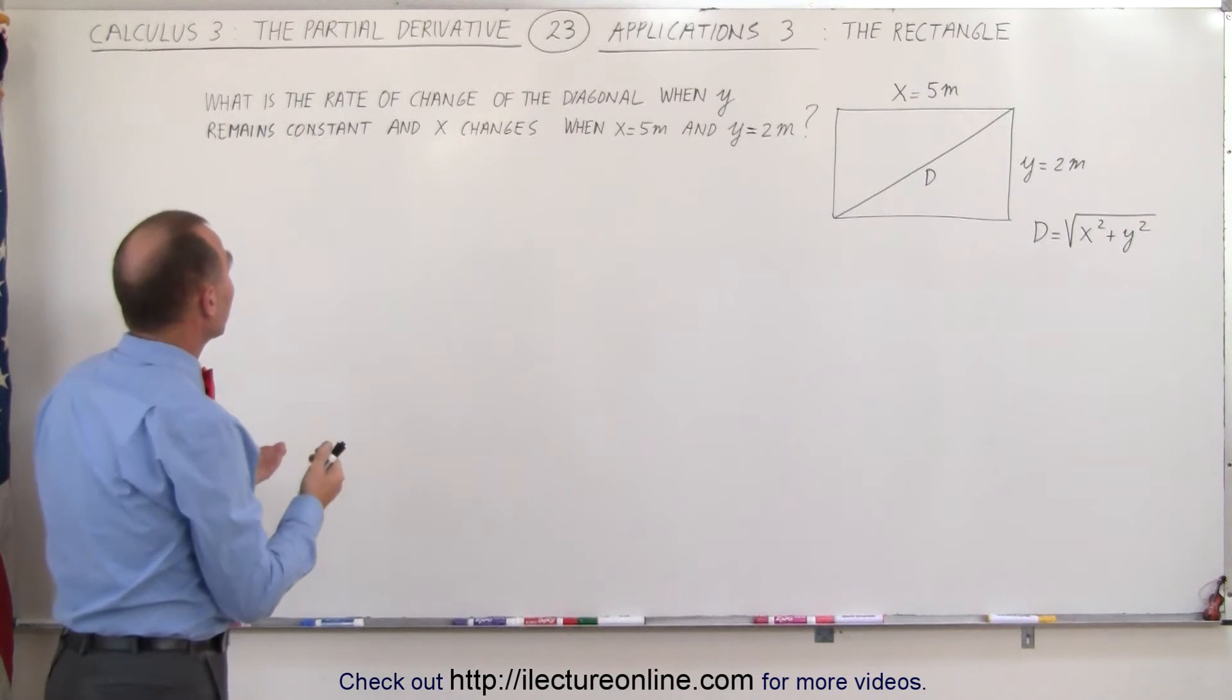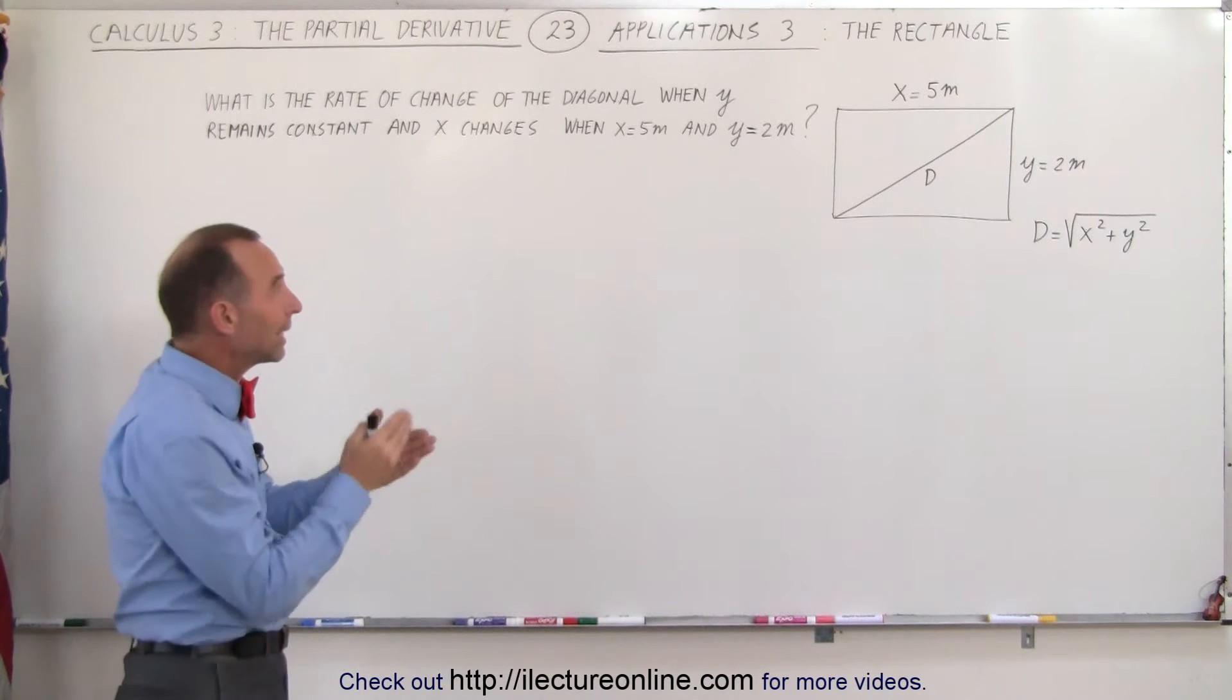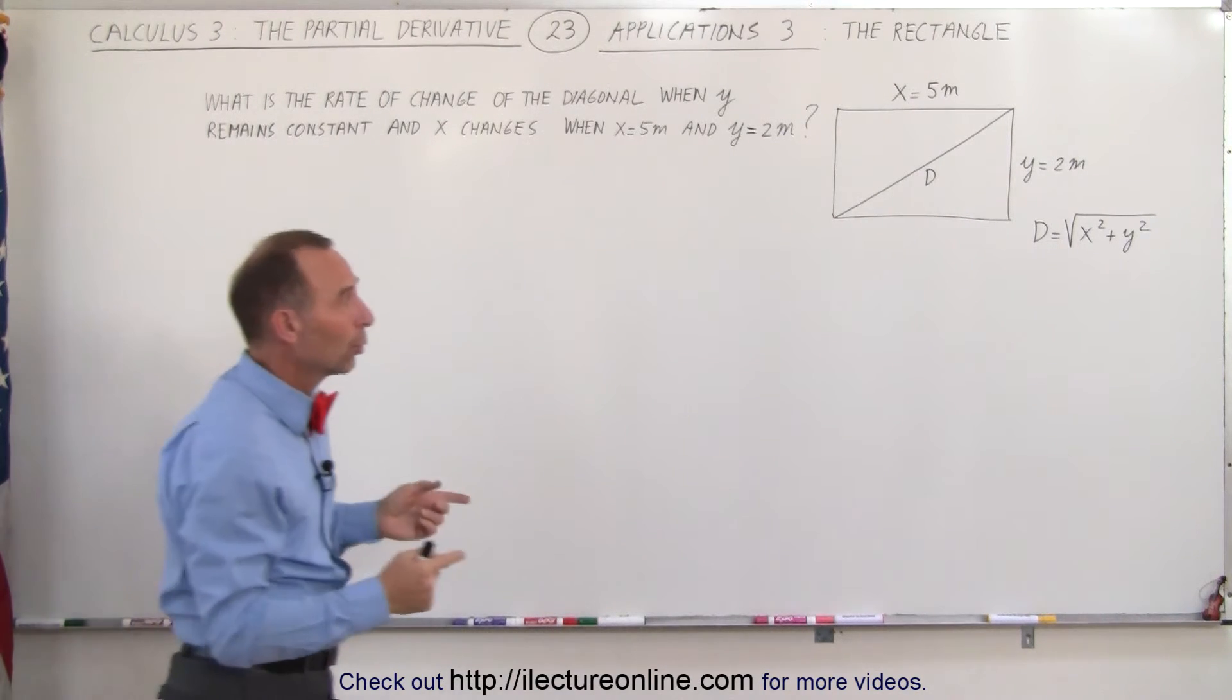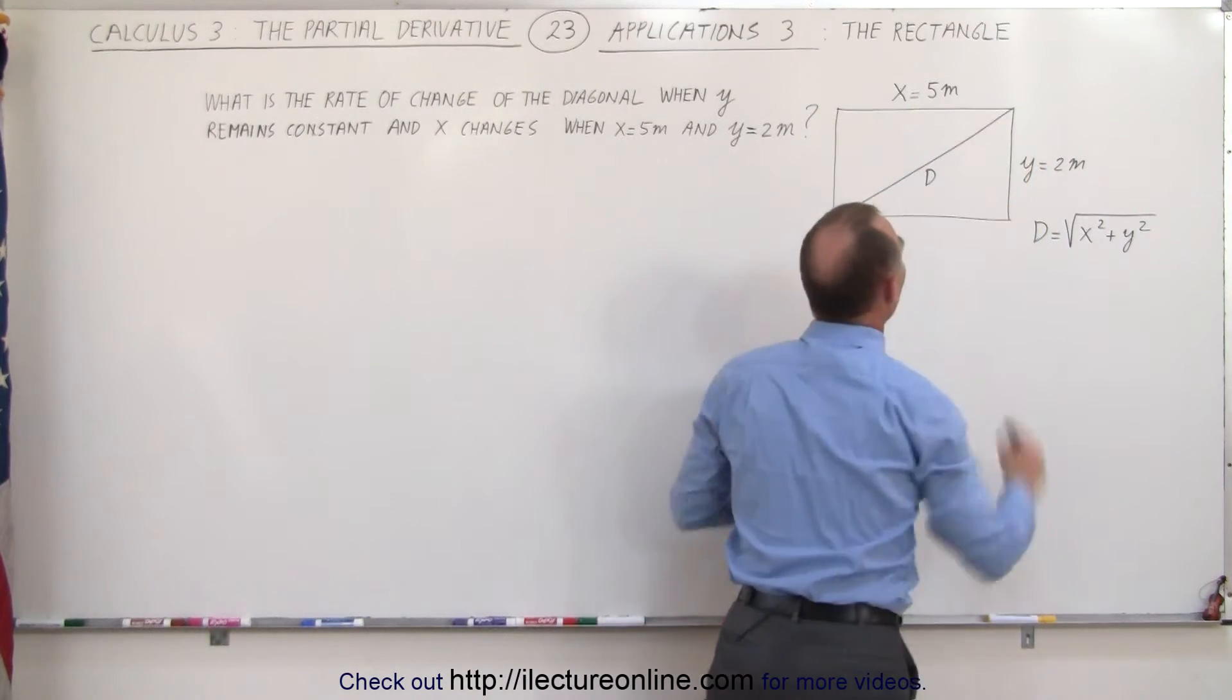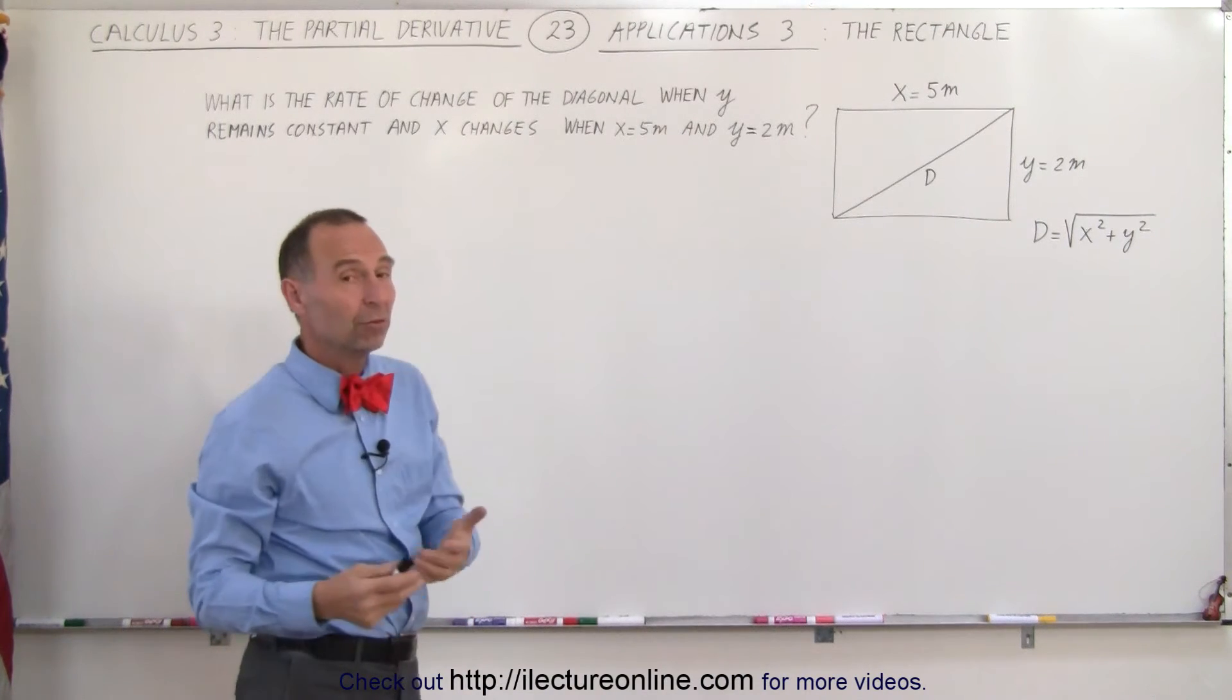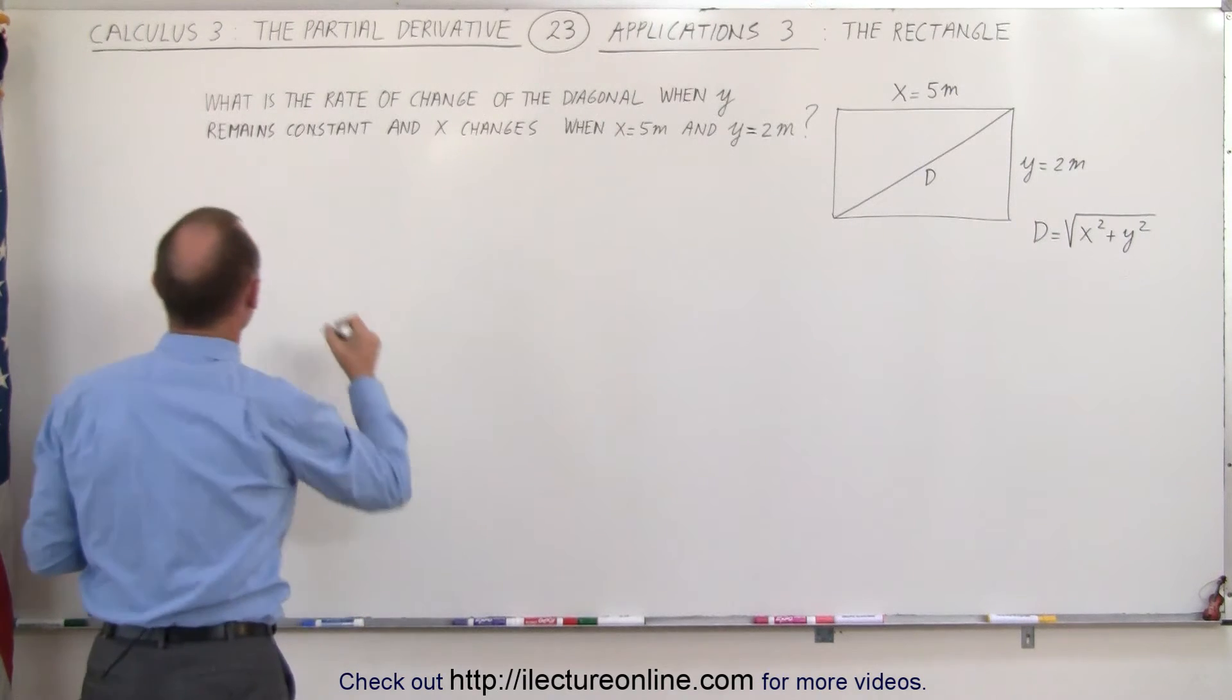If the question goes as follows, what is the rate of change of the diagonal when I keep the variable y constant but change the variable x? With other words, I'm going to change the length but not the width, and then how will the diagonal length change according to that? Which means we're going to find the partial derivative of the diagonal with respect to x.